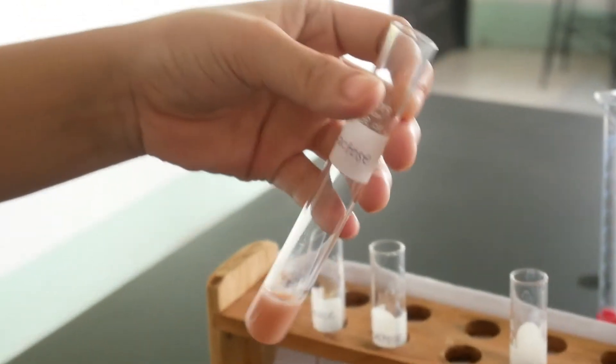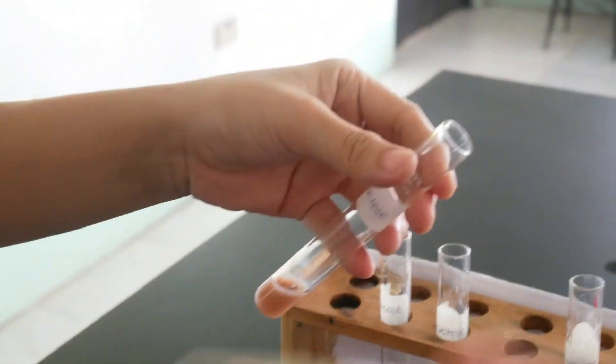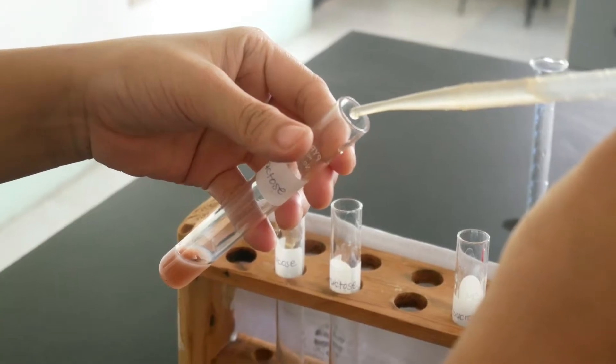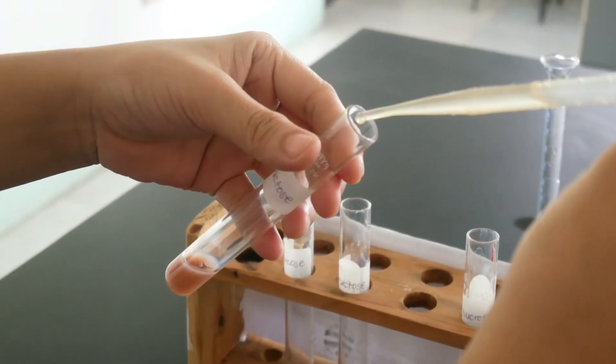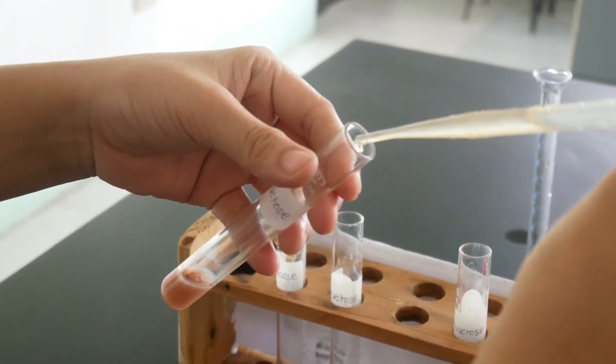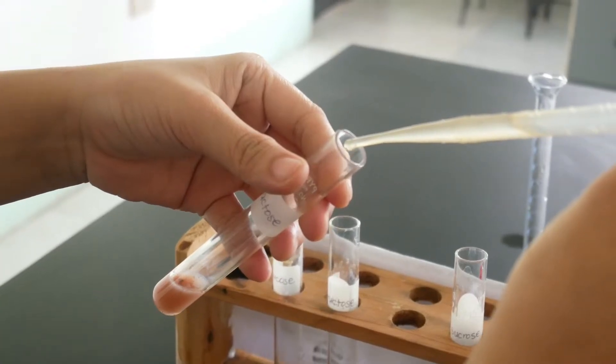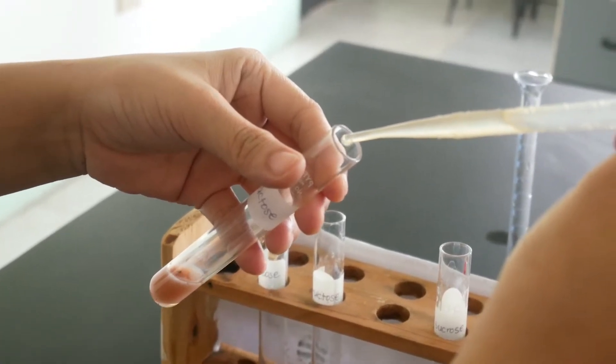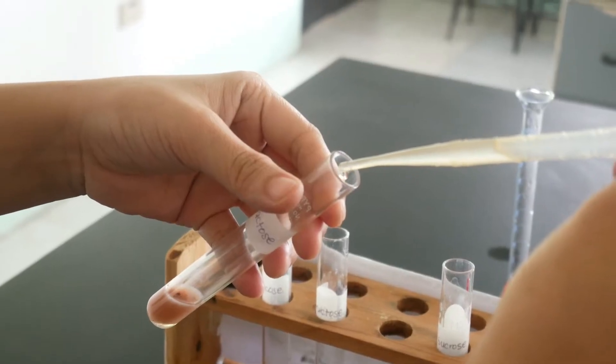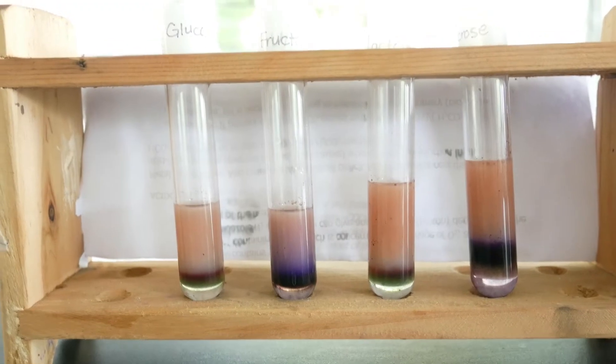And then carefully add about 15 to 20 drops of concentrated sulfuric acid and allow it to flow down the side of the tube. Do not stir. The sulfuric acid will form a bottom layer and then note the color formed at the zone in between the two liquids.